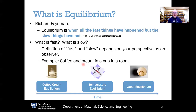When we started this course back in chapter one, I introduced the concept of equilibrium. One of my favorite definitions of equilibrium is from Professor Richard Feynman, who said in his book Statistical Mechanics that equilibrium is, quote, 'when all the fast things have happened, but the slow things have not.' This does seem a little flippant at first, but there's actually a lot of truth buried in that quote.